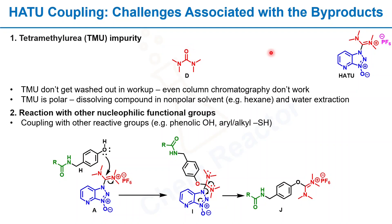I did a postdoc in medicinal chemistry and during the postdoc I made more than 200 amide bonds. During this amide bond formation HATU was my first choice because it's a very simple reaction — you just need to add starting materials, HATU, DIPEA, and then DCM or DMF as a solvent. But during this amide bond formation I faced some problems and challenges.